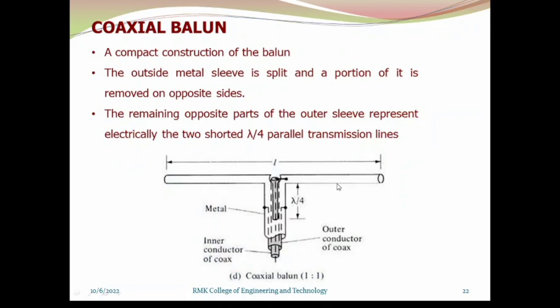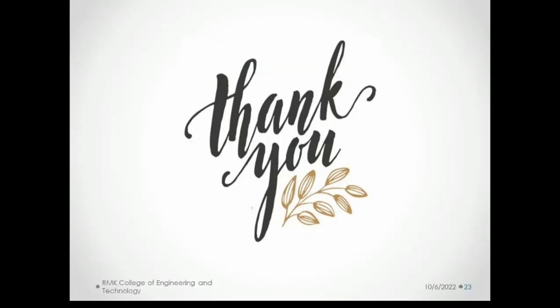The third is the compact design of the balun structure. Here, an outer metal sleeve is fitted to the coaxial cable, and a portion of it is removed on opposite sides. The remaining opposite parts of the outer sleeve electrically represent two shorted lambda/4 parallel transmission lines connected in parallel. This is the way we minimize the outer current component in order to balance the coaxial cable to the antenna system. With this, we wind up today's class.